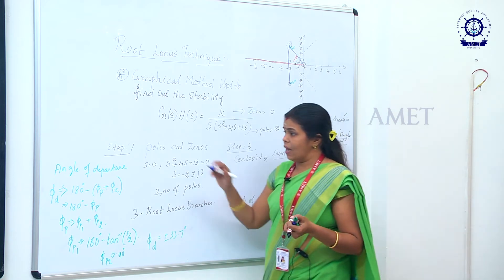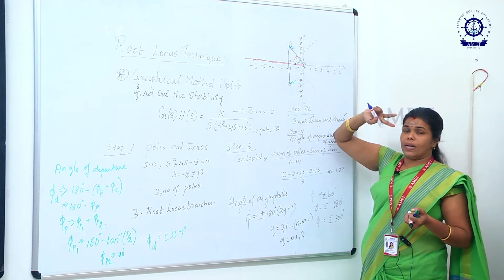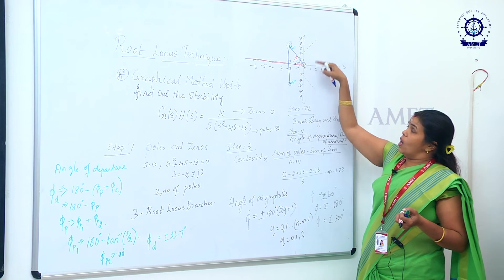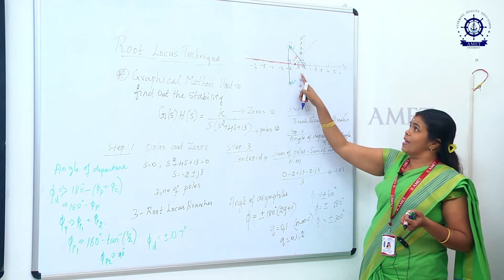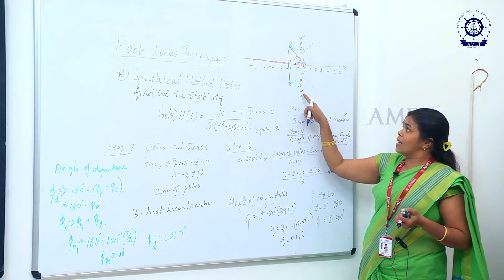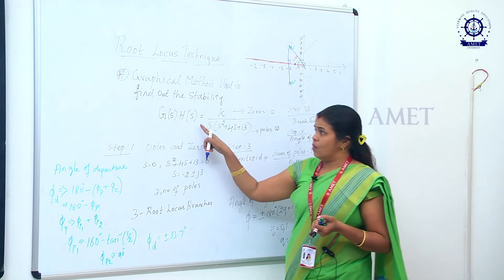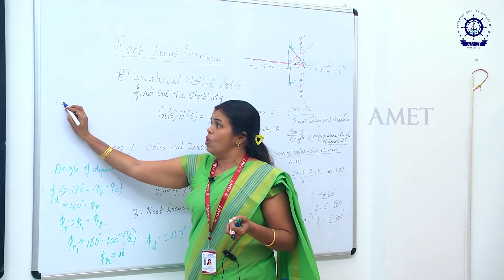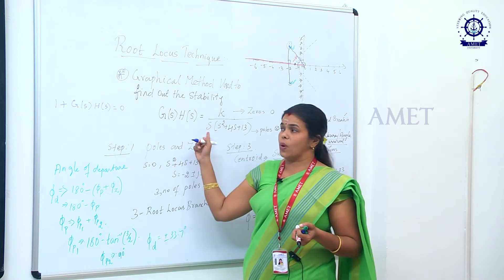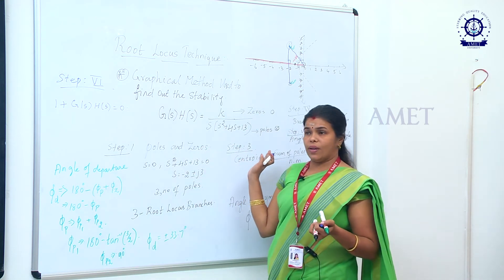The last step, Step 6, is to find the crossing point of the root locus on the imaginary axis. We use the characteristic equation 1 + G(s)H(s) = 0 to find where the root locus crosses the imaginary axis.